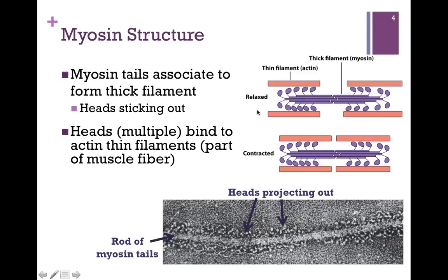The actin is actually a part of the muscle fiber, and the role of myosin is to draw those muscle fibers together. At the top of the screen we have the muscle in its relaxed form — the thick filament myosin bundle in contact with the actin representing the muscle fiber. Its role is to move its motor so as to bring those two muscle fibers together. At the very bottom of the screen is an electron micrograph of the thick filaments, showing the thick rod of myosin tails and the globular heads projecting out.